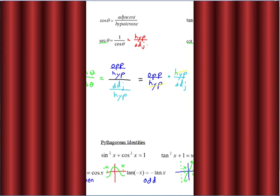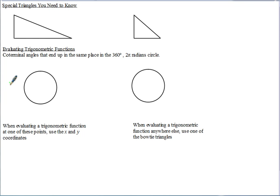Now there are different ways of evaluating trig functions and solving trig equations. I think the easiest way is to just remember the two special triangles. The two special triangles you need to know are the 30-60-90 and the 45-45-90.